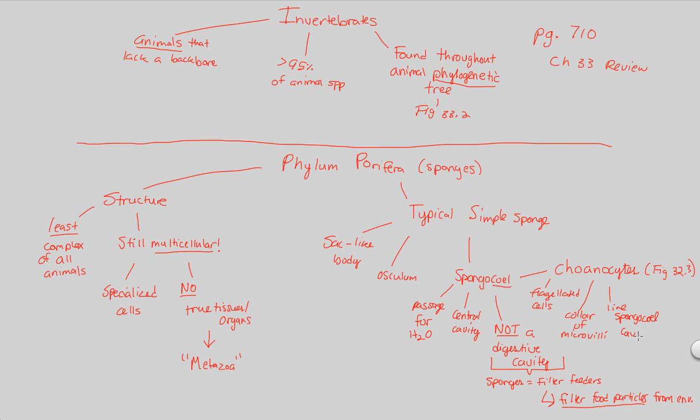In addition, the choanocytes are necessarily going to be there for the fact that they line the spongocoel cavity. So the cavity, that central cavity used for water passage, is going to be lined by choanocytes. And because of this, they're going to be very useful in the following process. Choanocytes are very good at ingesting food. They're very good at taking in food, specifically things like they ingest bacteria, plus other tiny food particles, just like we mentioned before.